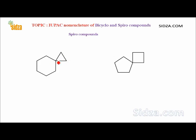If two cyclic rings are joined together by one common carbon atom, the compound is called a spiro compound. Here the six-membered ring and the three-membered ring are joined by one common carbon atom, called the spirocarbon. When we name these compounds, we use the term 'spiro' as a prefix.